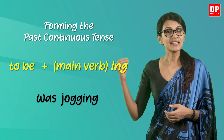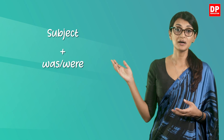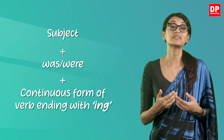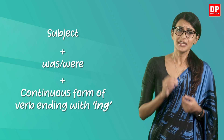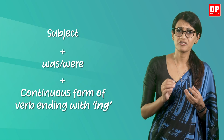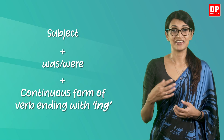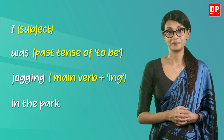A sentence would have the structure: subject plus 'was' or 'were' plus the continuous form of the verb ending with '-ing.' So if we refer to the example given earlier, it would be 'I' — which is the subject — 'was jogging in the park.'